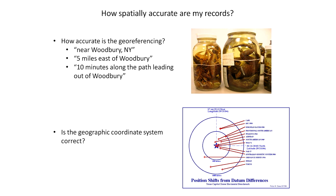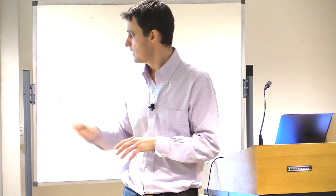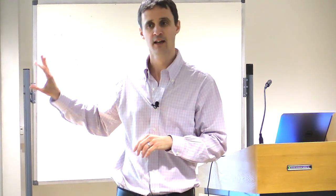Whenever you're downloading data or getting it from a colleague, one of the first questions you've got to ask is: what is the geographic coordinate system that we are working with here? Without knowing that, we can make some assumptions — the safest bet is that it's latitude and longitude and WGS 1984 is the kind of standard system. But if it's wrong, you can get all sorts of errors. You must know and must be asking this kind of metadata: what's the coordinate system that these data are collected in? There's no backtracking to work it out later.